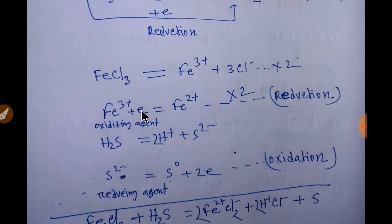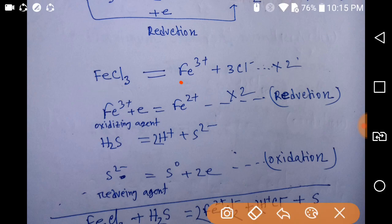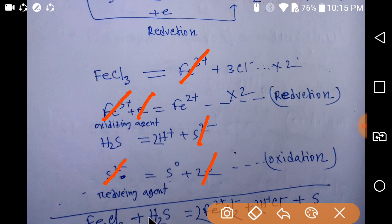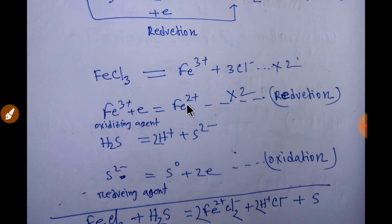So to balance the electrons: sulfide is losing two electrons but iron is taking one electron. We have two electrons, so multiply the iron equation by two to get two electrons and two ferric ions. Then multiply accordingly and combine — canceling out common terms — you get ferric chloride plus hydrogen sulfide giving ferrous chloride.